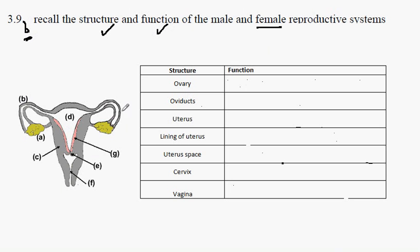Here we have the image of the female reproductive system and here's our table. It's worth mentioning that before a pregnancy occurs, the uterus structure is no larger than perhaps an orange. Don't confuse this with the large size of the pregnant woman's uterus.